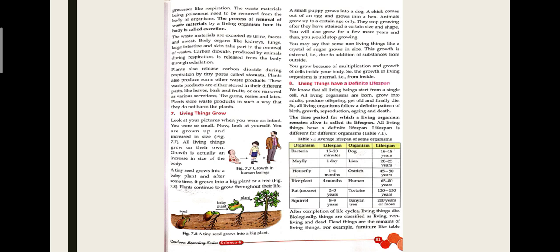Inside our body, multiplication of cells takes place — cells grow from 1 to 2, 2 to 4, 4 to 6. So growth in living things is internal, from inside the organism. To summarize: plants grow throughout their lifespan with no age limit, but animals grow only up to a certain age. This proves that living things grow.